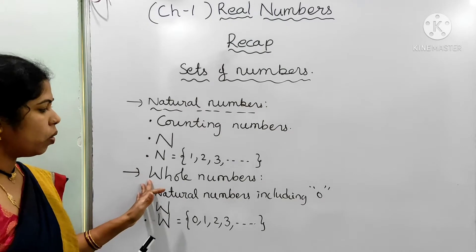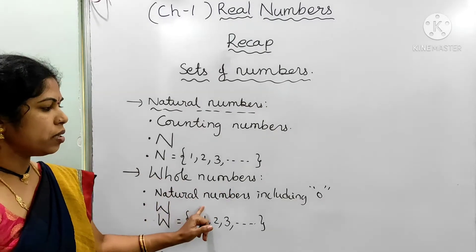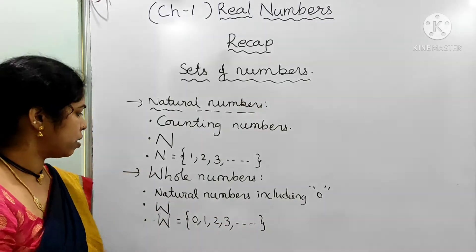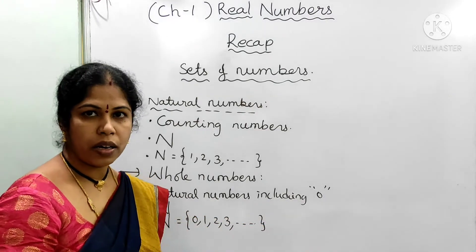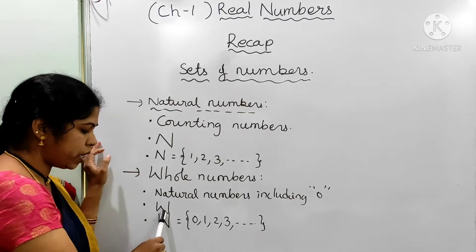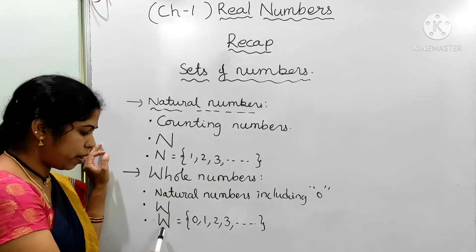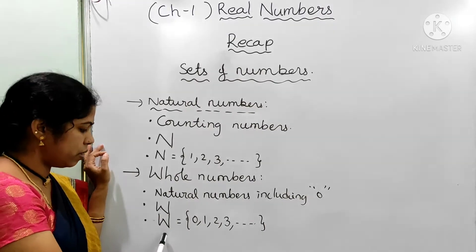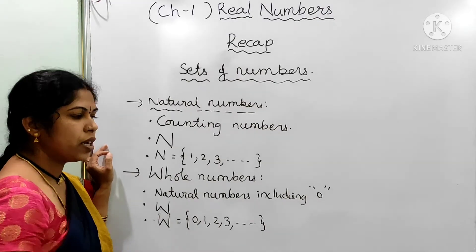And also whole numbers you have learnt. Natural numbers including 0 are whole numbers. Whole numbers will be denoted with the letter capital W, and you can write the set of whole numbers as W = {0, 1, 2, 3, ...}.